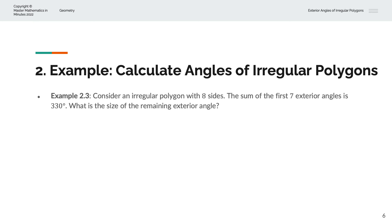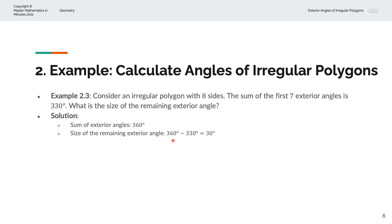In the third example, we are asked to consider an irregular polygon with 8 sides. We are given that the sum of the first 7 exterior angles is 330 degrees, and we are asked to calculate the size of the remaining exterior angle. Since the sum of all exterior angles is always 360 degrees, the remaining exterior angle is 360 minus 330, which gives us 30 degrees.